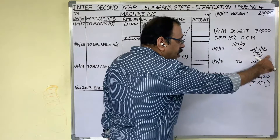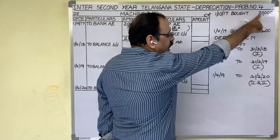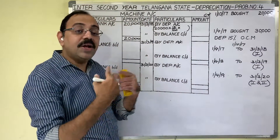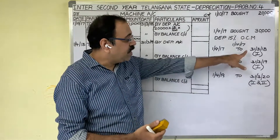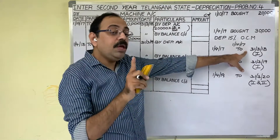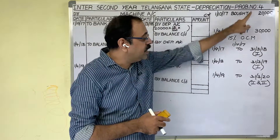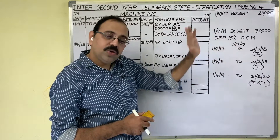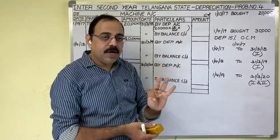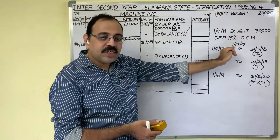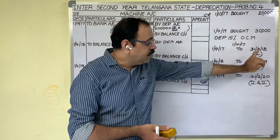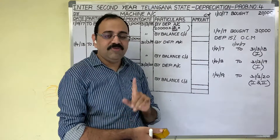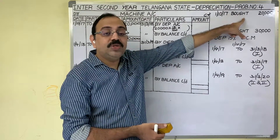In this 1st year, they purchased the 20,000 rupees worth asset on 1st October 2017 and from that day they started using this asset. So in the 1st year, for how many months did they use this asset? From 1st October: October, November, December 2017, then January, February, March 2018 — that is 6 months. In the 1st year, the 20,000 rupees worth asset was used for 6 months.